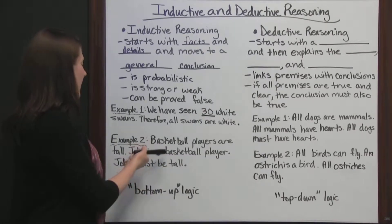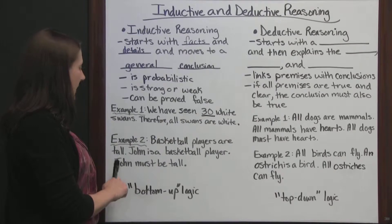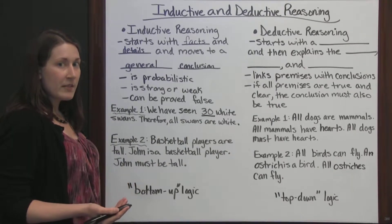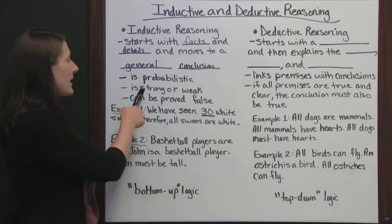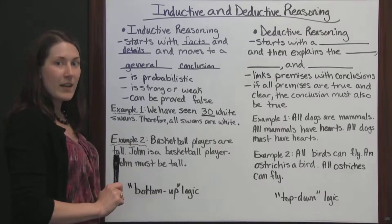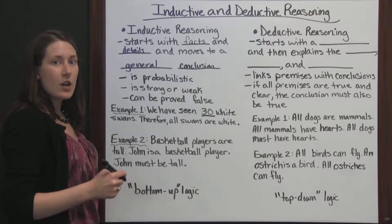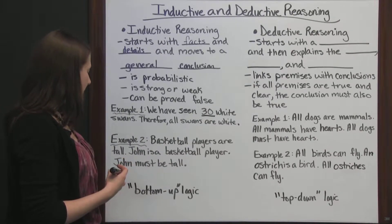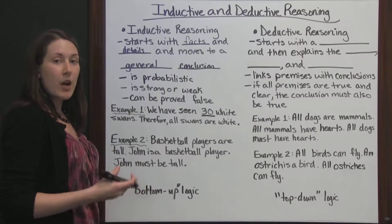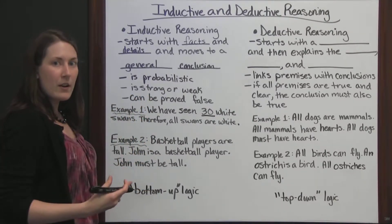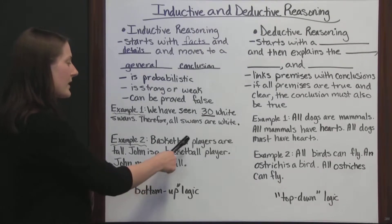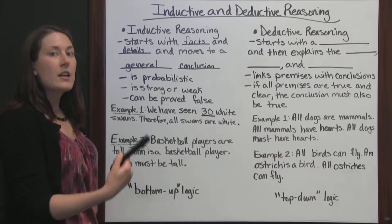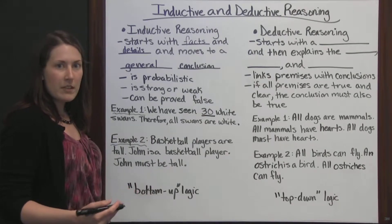Let's look at the next one. Basketball players are tall. John is a basketball player. John must be tall. We don't actually know John, so we're not sure about this one. It's very probable — this would be a stronger conclusion than our one about the white swans, but we don't know John. John could be short; John could just be really good at making goals. That doesn't mean he is going to be a tall person. It's probable, it's a stronger conclusion, but we don't know for sure. We just use inductive reasoning, knowing that basketball players are generally tall and that John is a basketball player, to figure out that John is probably tall.